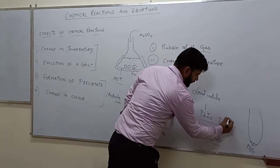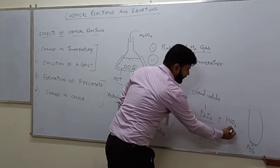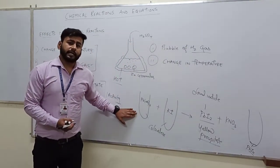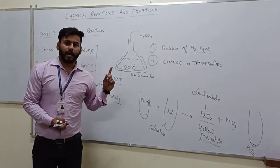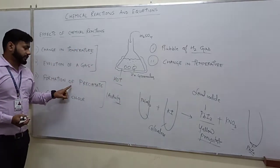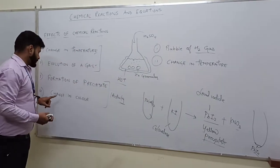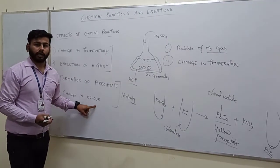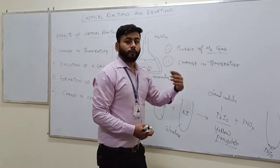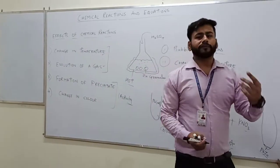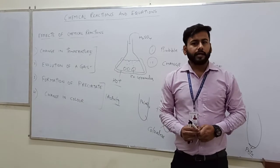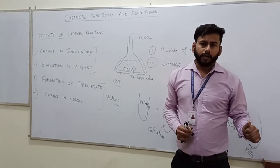Along with that, KNO3 will also be formed. In this reaction you can see that both effects have been observed: there is formation of a precipitate as well as there is some change in colour, because initially both solutions were colourless and now we have obtained yellow colour. So these are the basic changes that are observed in a chemical reaction — either one or more of them can be observed.